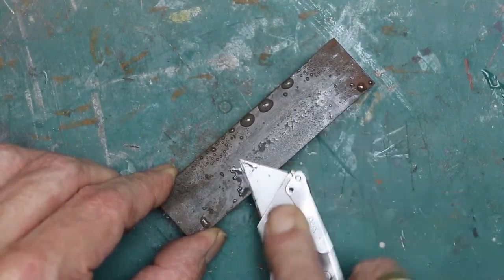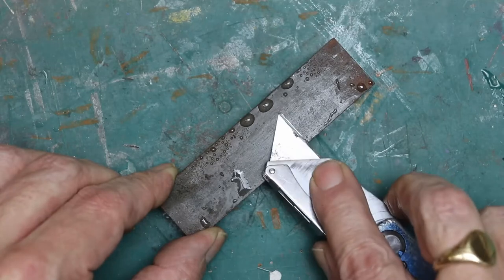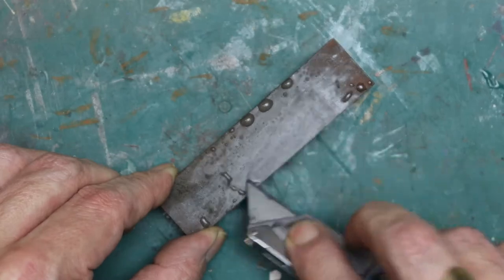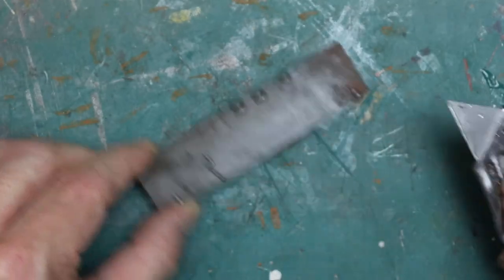Instead of it going dull and trying to get your money's worth out of it and keeping going even though it's very dull, all you have to do is give it a few strokes on your stone in between doing two or three cuts on paper or whatever it is that you're modeling, and you'll resharpen it back to being a brand new blade again.